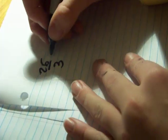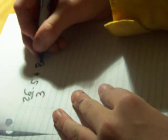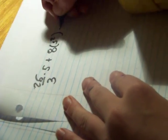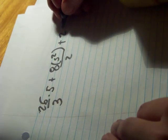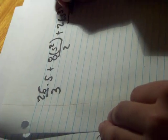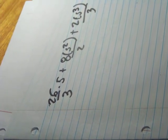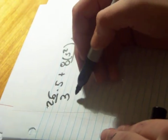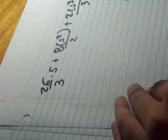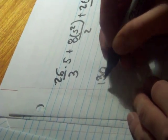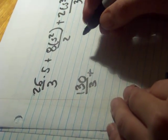So, evaluate it at 5. So, 26 thirds times 5, plus 8 times 5 squared. Wait, 5 squared over 2. This is, of course, 4y squared. Plus, 2 times 5 cubed over 3. Okay, we get 26 times 5, that's, let's see, 26, 36, 37, 38. Okay, that's 130 over 3.